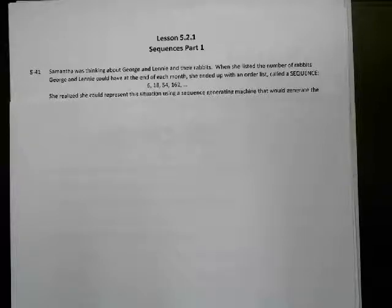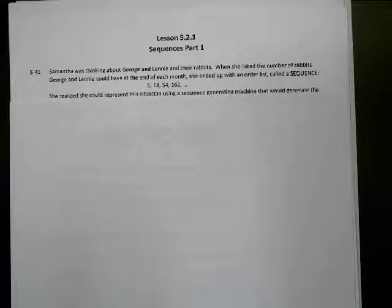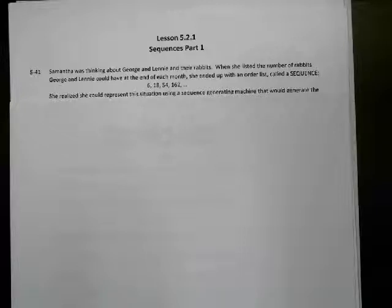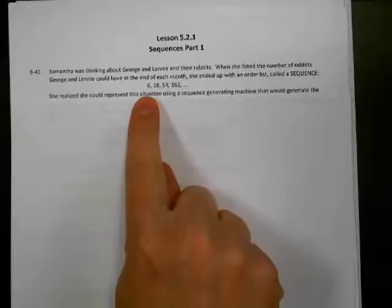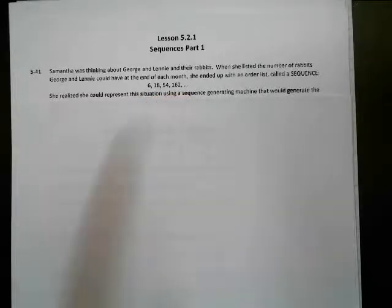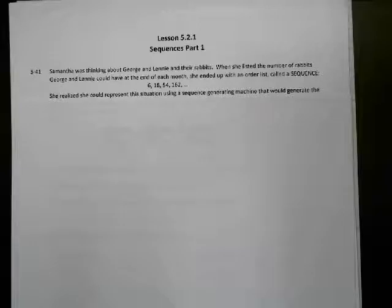So Samantha was thinking about George and Lenny and their rabbits. When she listed the number of rabbits that George and Lenny could have at the end of each month, she decided to just make a list of numbers — instead of having an X for the number of months and a Y for the number of rabbits, she just wrote down the number of rabbits each month. And this is what we would call a sequence. She started with six rabbits, then 18, 54, 162... The ellipses just means that it keeps on going in the same pattern forever.